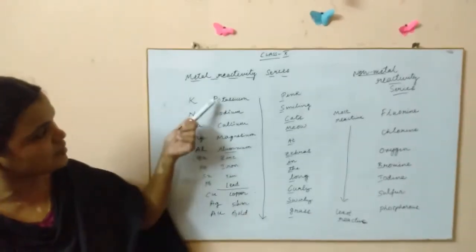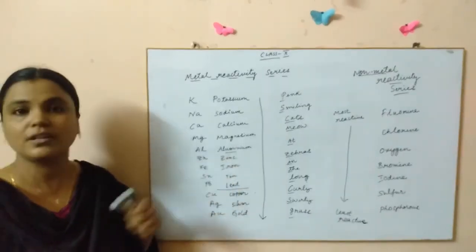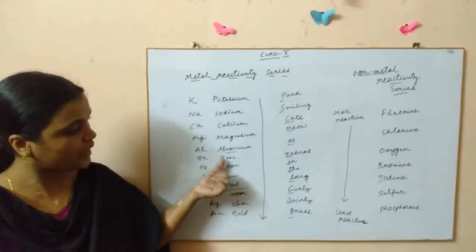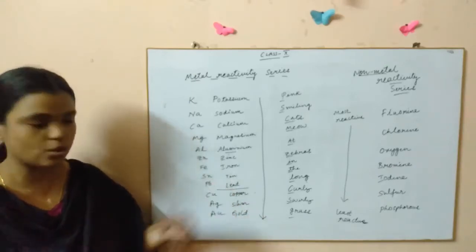We'll first go with the metal reactivity series. Here are these elements: potassium, sodium, calcium, magnesium, aluminum, and after aluminum you'll have carbon which is a nonmetal so I'll not include it. Then zinc, iron, tin, lead.